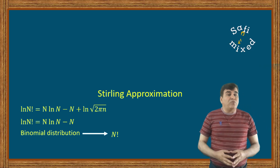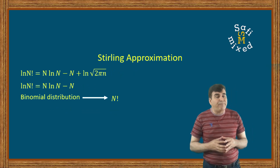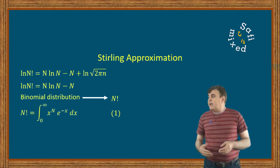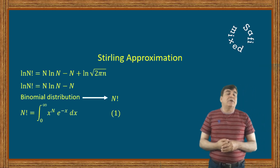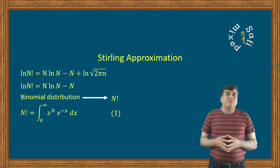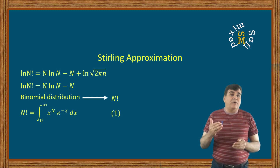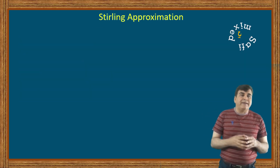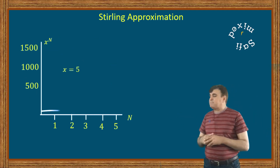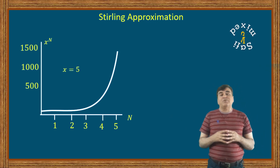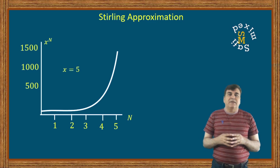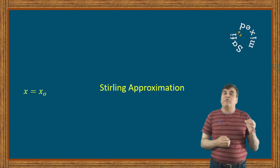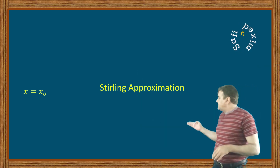We know from our video on the gamma function that n factorial can be expressed in the form of this integral, where from a thermodynamic point of view, x could be any thermodynamical variable. Let us first look at the behavior of the two terms in the integrand. The first term, x raised to the power n, is a steeply increasing function of n. We can observe the behavior of this term by plotting it against n as shown in this figure. Whereas the exponent term, e to the minus x, is a decreasing function of x. Due to this twofold behavior of the integrand, for a given n, the integrand becomes maximum for a certain value of x, which we call x equal to x0.